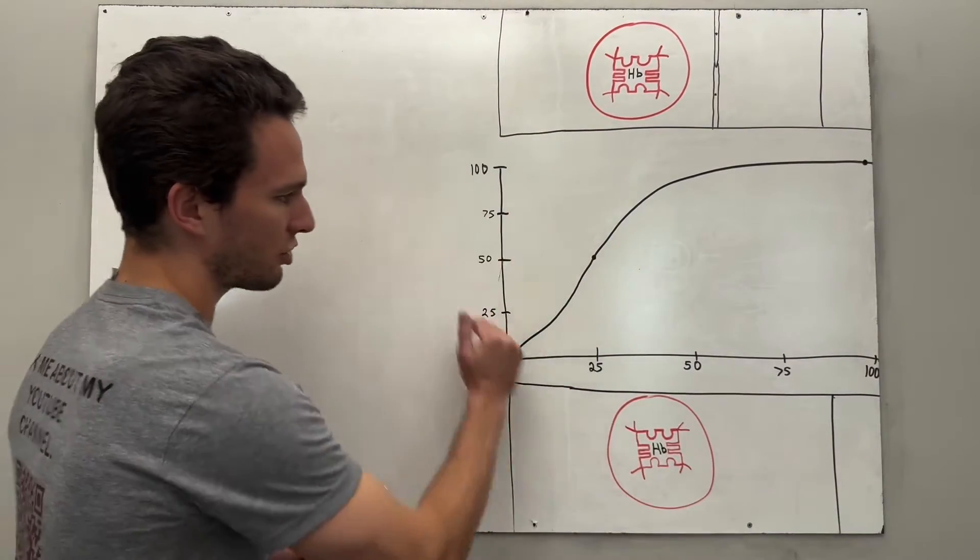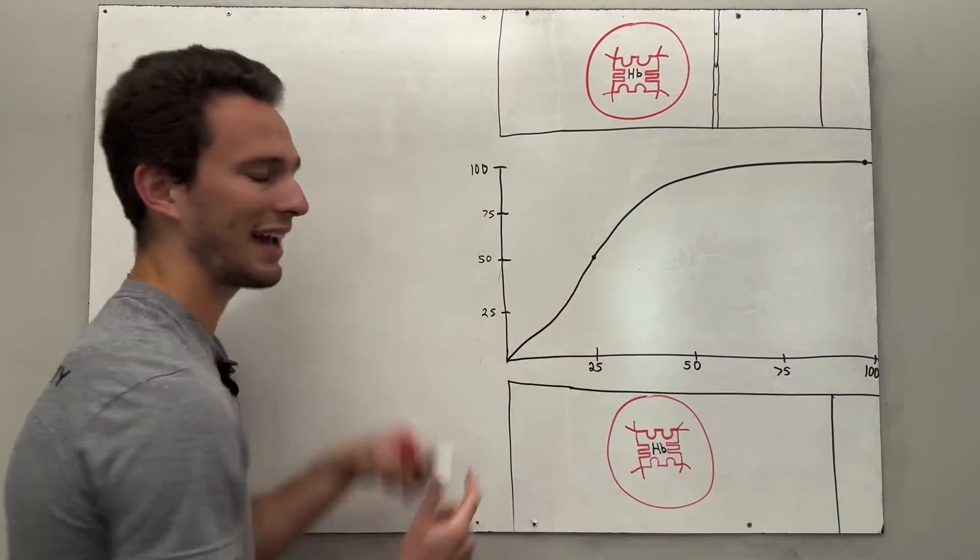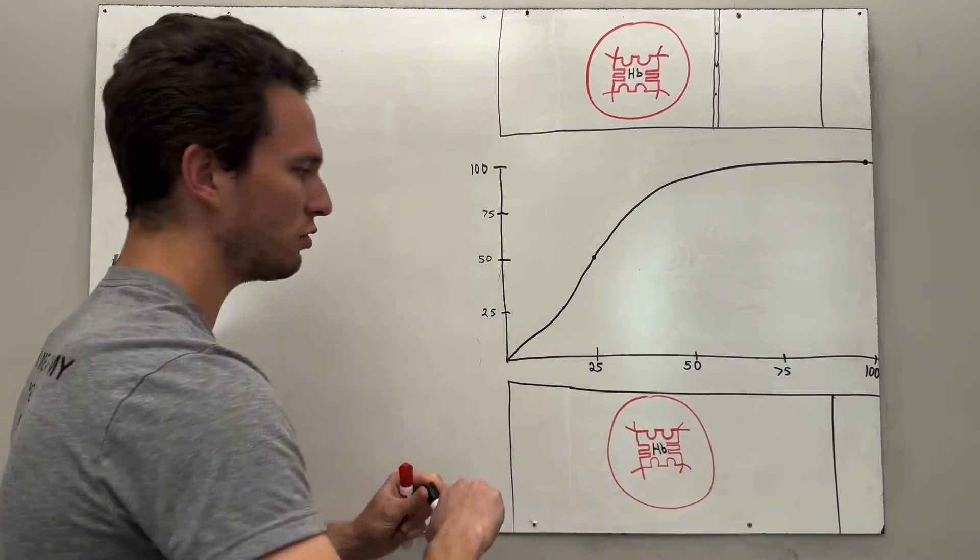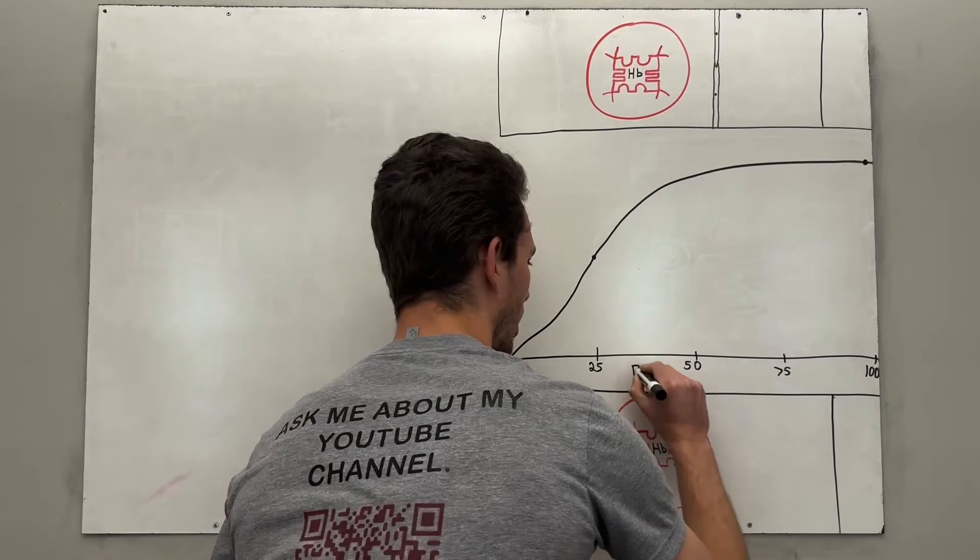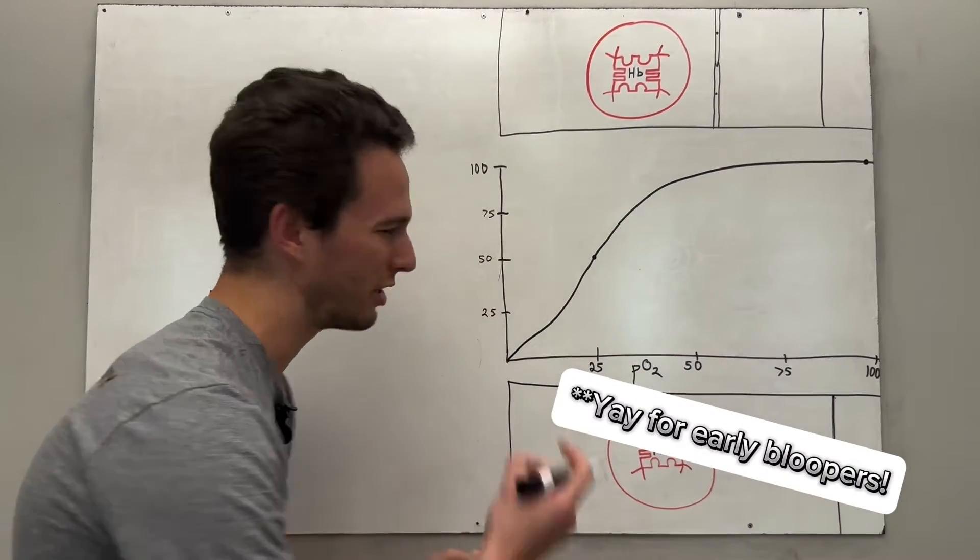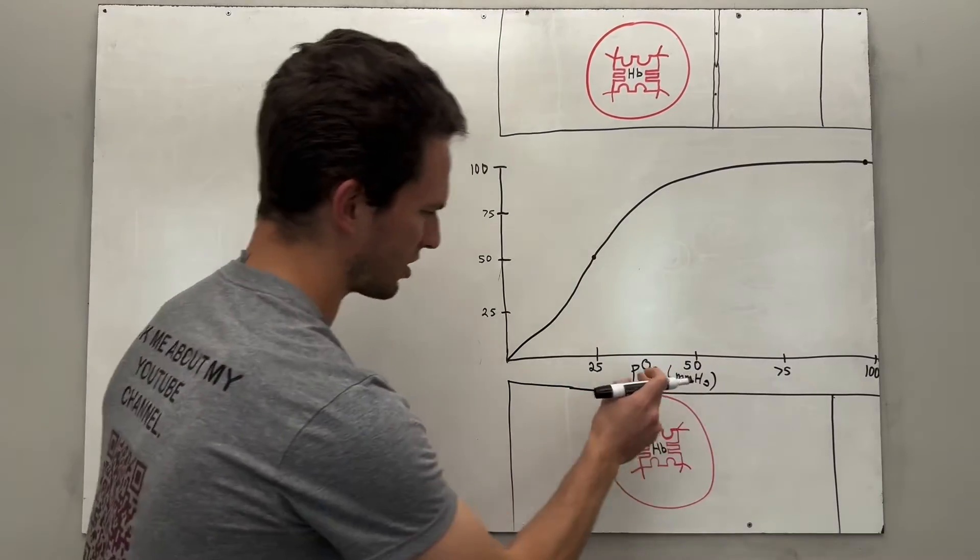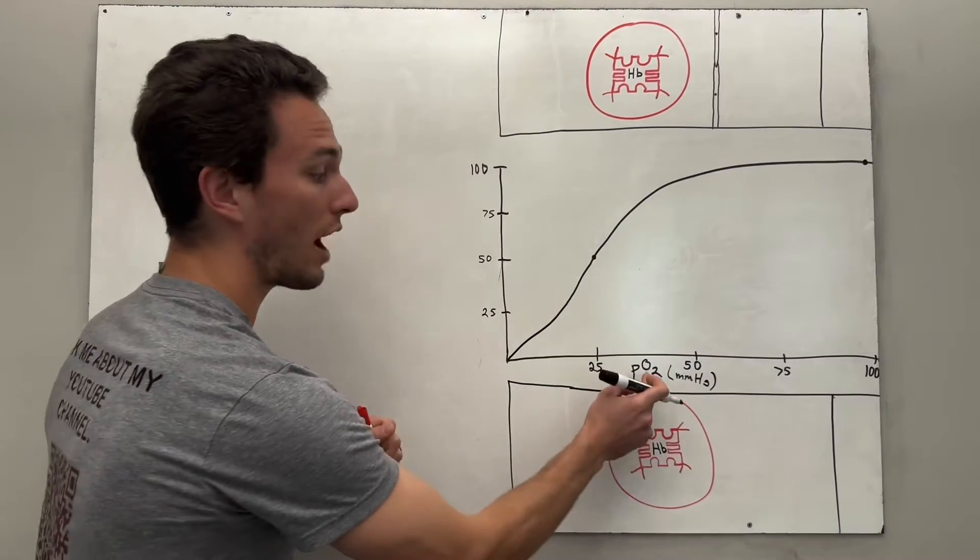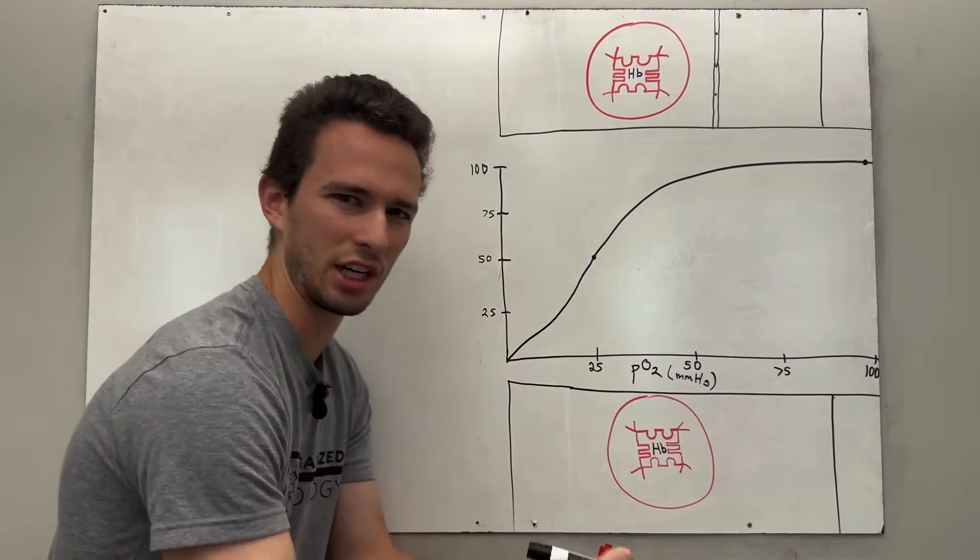First off, in order to understand the graph, we've got to understand the axes, right? What's on the axis? On the x-axis, you see that it is the partial pressure of oxygen, and any pressure is going to be measured in millimeters of mercury. So it's pressure. That means there's some sort of force of oxygen, a gas, pushing on something.